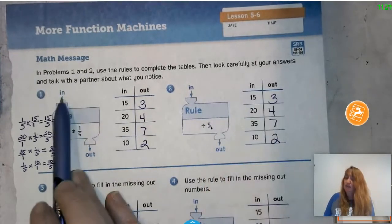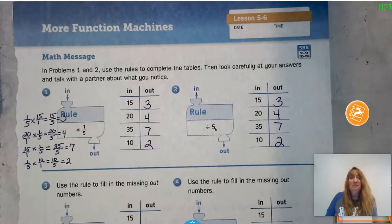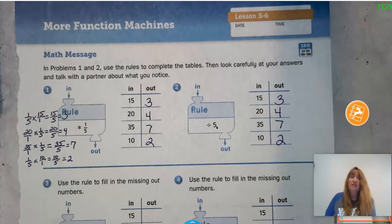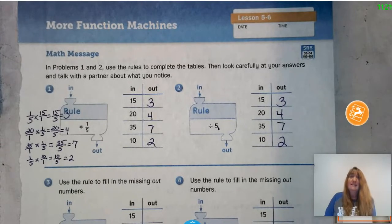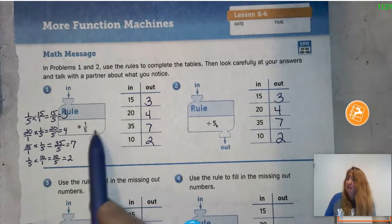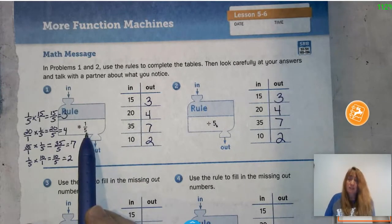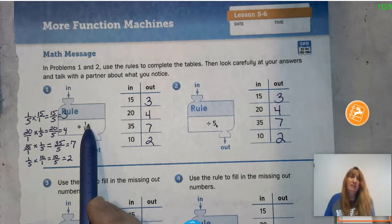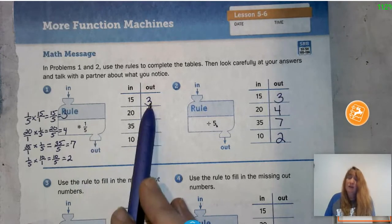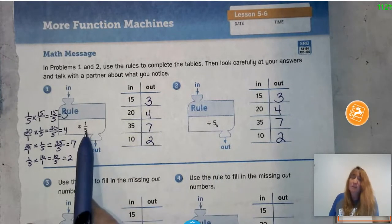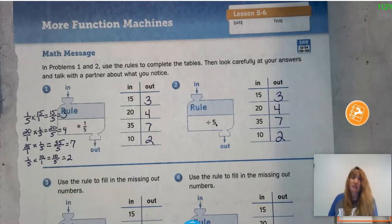Now look carefully and talk with a partner about what you notice between the two tables. The answers are exactly the same! In table 1 I was multiplying by 1/5, and in table 2 I was dividing by 5 — and I got the same answer. So multiplying by 1/5 is essentially dividing by 5, and I only need one of those answers each time.